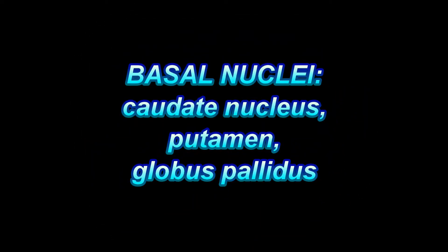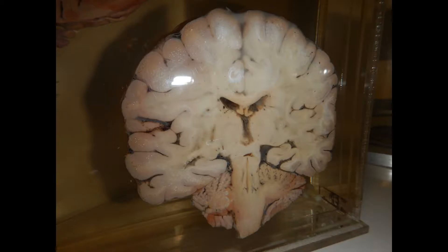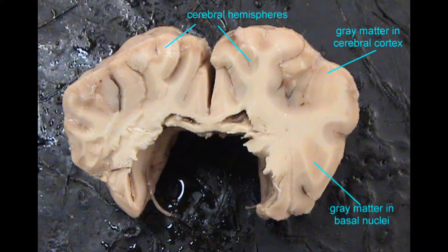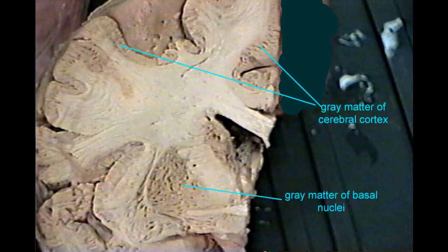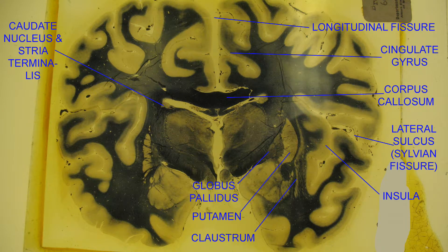The overwhelming majority of soma of neurons in the cerebrum are located in the outer several millimeters, what is known as the cerebral cortex. There are, however, neuronal soma deeper inside the cerebrum, and these are the basal nuclei. They are quite frequently called the basal ganglia, but technically the term ganglion refers to a cluster of soma outside the central nervous system, so these are more appropriately referred to as the basal nuclei, although they are commonly called the basal ganglia.